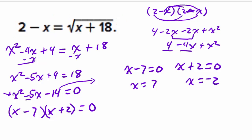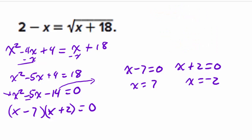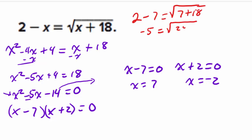We substitute x equals 7 back into the original: 2 minus 7 equals the square root of 7 plus 18. The left side is negative 5. The square root of 25 is 5, and since we only take the principal (positive) root, we get 5. Negative 5 does not equal 5, therefore x equals 7 is not a solution — it's extraneous.